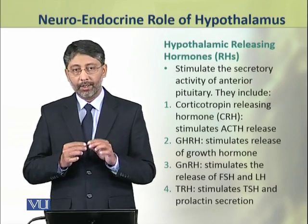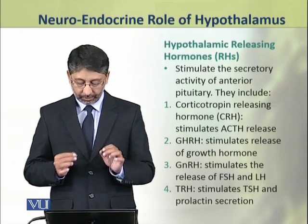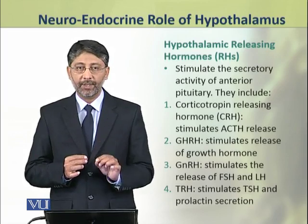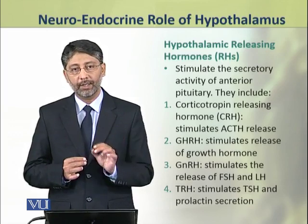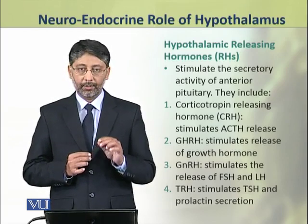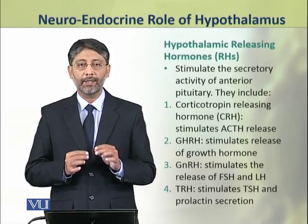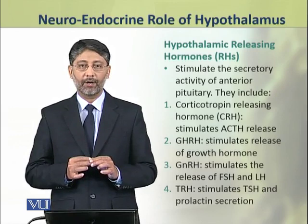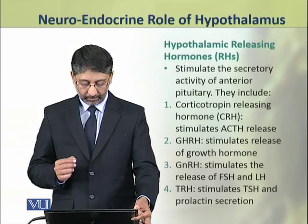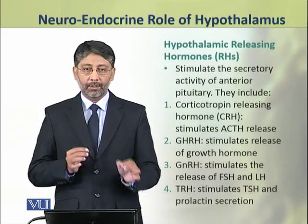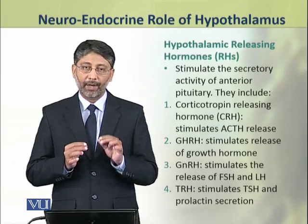The third hormone is the gonadotropin releasing hormone, which stimulates the release of FSH and luteinizing hormone from adenohypophysis. The fourth hormone is the thyrotropin releasing hormone or TRH, that stimulates the production of TSH from anterior pituitary. In addition to this, TRH also stimulates the secretion of prolactin.